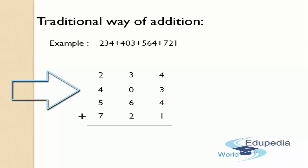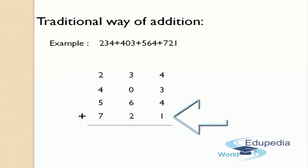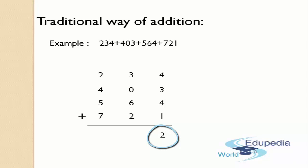Let us start adding the ones place. 1 plus 4 is 5, 5 plus 3 is 8, and 8 plus 4 gives us 12. Here, 12 is a two-digit number and there is one more column after this first column, so we cannot write 12 directly in the answer's place. What we have to do is write 2 in the answer's place and carry the remaining 1 to the next column, that is, to the tens place.